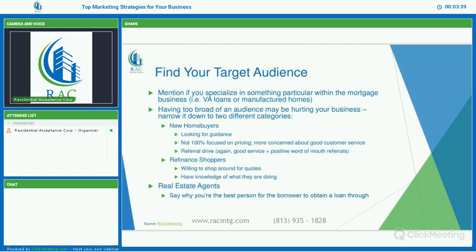Finding your target audience. If you specialize in something particular within the mortgage industry, mention it — be clear and transparent so there is no confusion. For example, you may specialize in VA loans or manufactured homes. Having too broad of an audience may be hurting your business. Narrow it down into two categories. One would be new home buyers — they are looking for guidance, not 100% focused on pricing, and more concerned about good customer service.